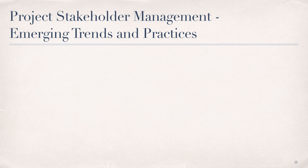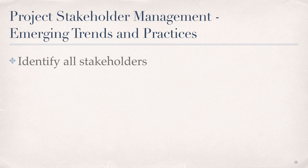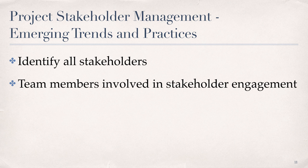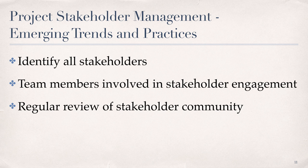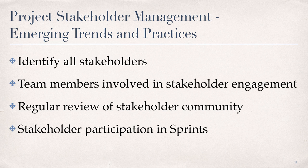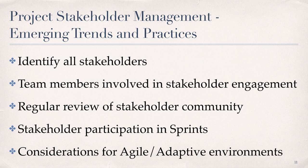There are evolving and emerging trends and practices for project stakeholder management identified in the PMBOK, which include identification of all stakeholders and not just a limited set, ensuring that all team members are involved in stakeholder engagement activities, reviewing the stakeholder community regularly in parallel with sprint reviews, and stakeholder participation in project sprints for co-creation of product increments. For Agile environments specifically, Agile teams engage with stakeholders directly rather than going through layers of management, which helps to mitigate risk, build trust, and support adjustments earlier in the product development lifecycle, reducing costs and increasing the likelihood of project success.